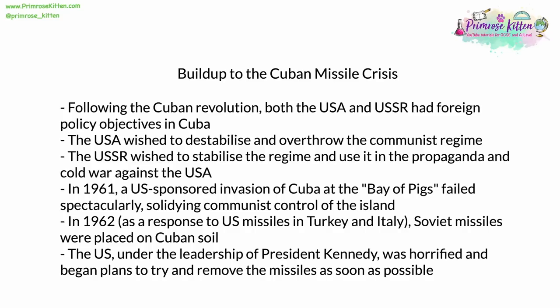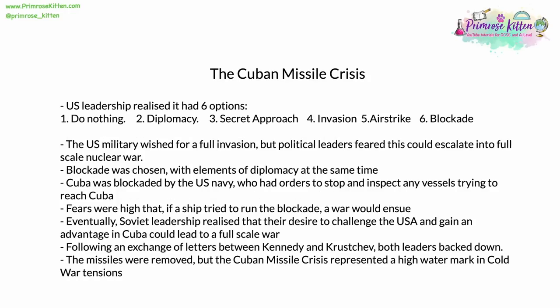In 1962, as a response to the presence of US missiles in Turkey and Italy — two countries relatively close to Soviet borders — Soviet missiles were placed on Cuban soil. The US, at this time under President Kennedy, was horrified. It began plans to remove the missiles as soon as possible. The US government quickly realized it had six possible options: one, do nothing; two, use diplomatic channels to resolve the crisis; three, a secret approach to either Castro himself or the USSR; four, an outright invasion of Cuba; five, an airstrike on Cuba; and six, a naval blockade of the island. The US military wished for a full invasion or possibly a nuclear strike, but political leaders feared this could escalate into a full-scale nuclear hot war with the USSR. Blockade was chosen as the best possible option, with elements of diplomacy and back channels at the same time.